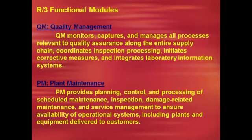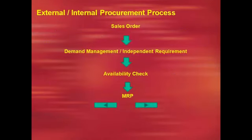For example, a customer — Alex or a company — needs a finished material D. To manufacture D, I need raw materials A, B, and C. If the customer requires 100,000 tons of material per month, the customer approaches company XYZ. The relationship between customer and company is a sales order — a legal document. When the company accepts the customer's requirement, we call it demand management or independent requirement.